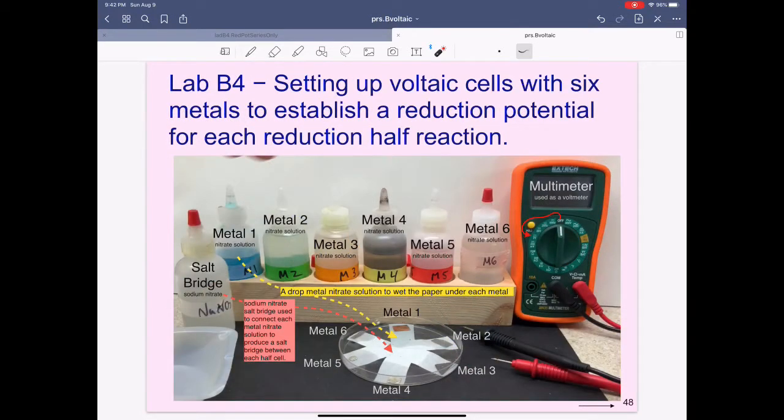In this Lab B4, we'll set up voltaic cells with six different metals to establish a reduction potential for each of the reduction half-reactions. We'll use the six metals with each of their corresponding nitrate solutions.